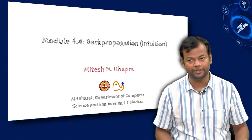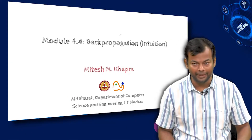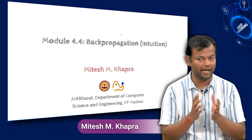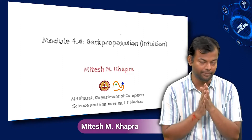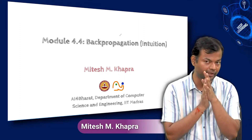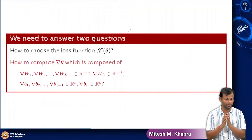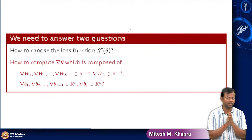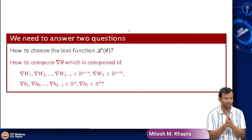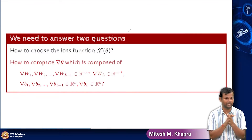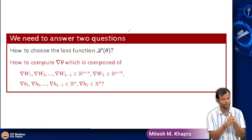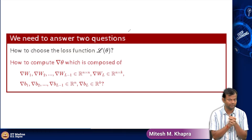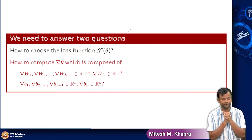So now let us build an intuition for the back propagation algorithm. So far we have answered the first part of the question which was how to choose the loss function, and we have taken two popular problems — classification and regression — and motivated the choice for the loss function for both of them.